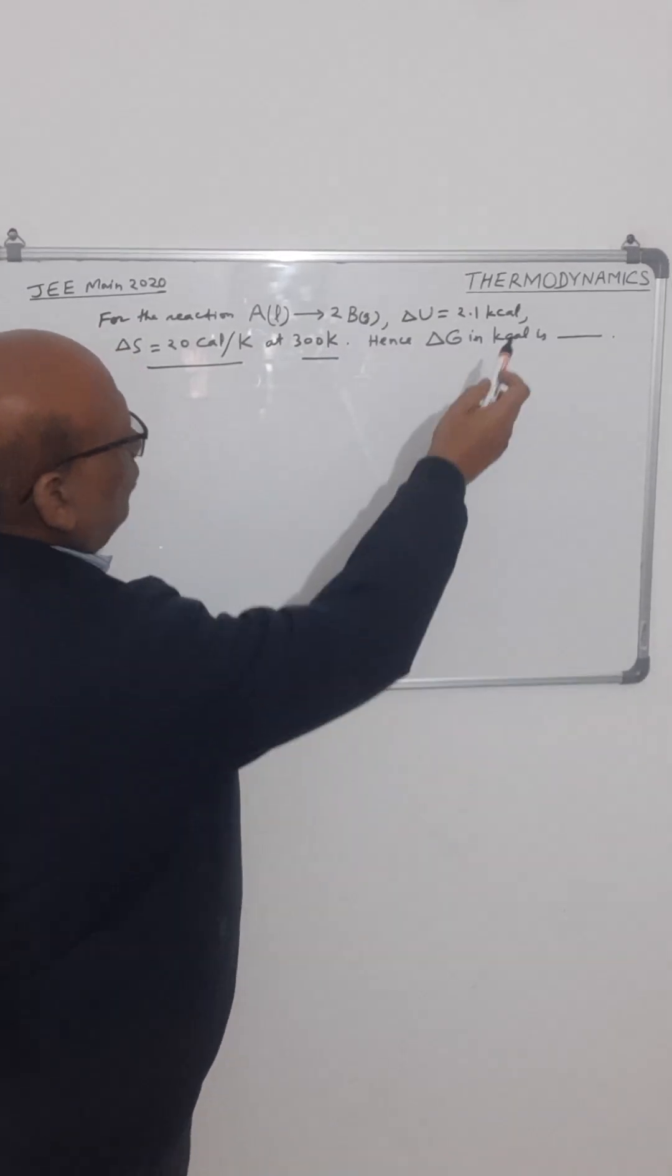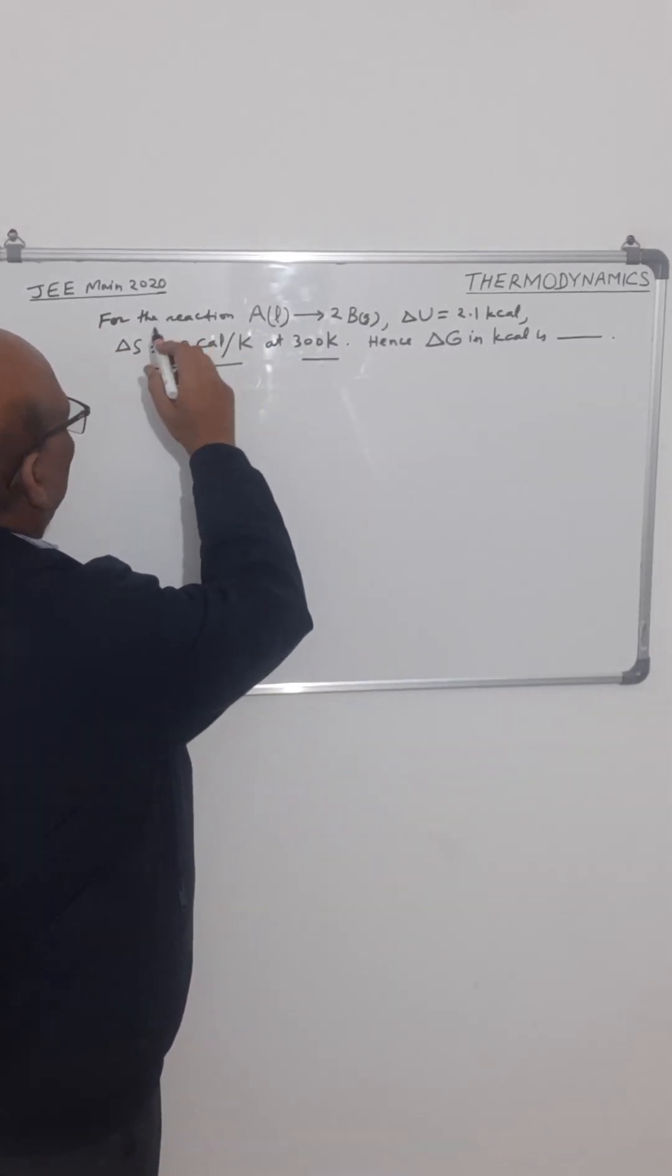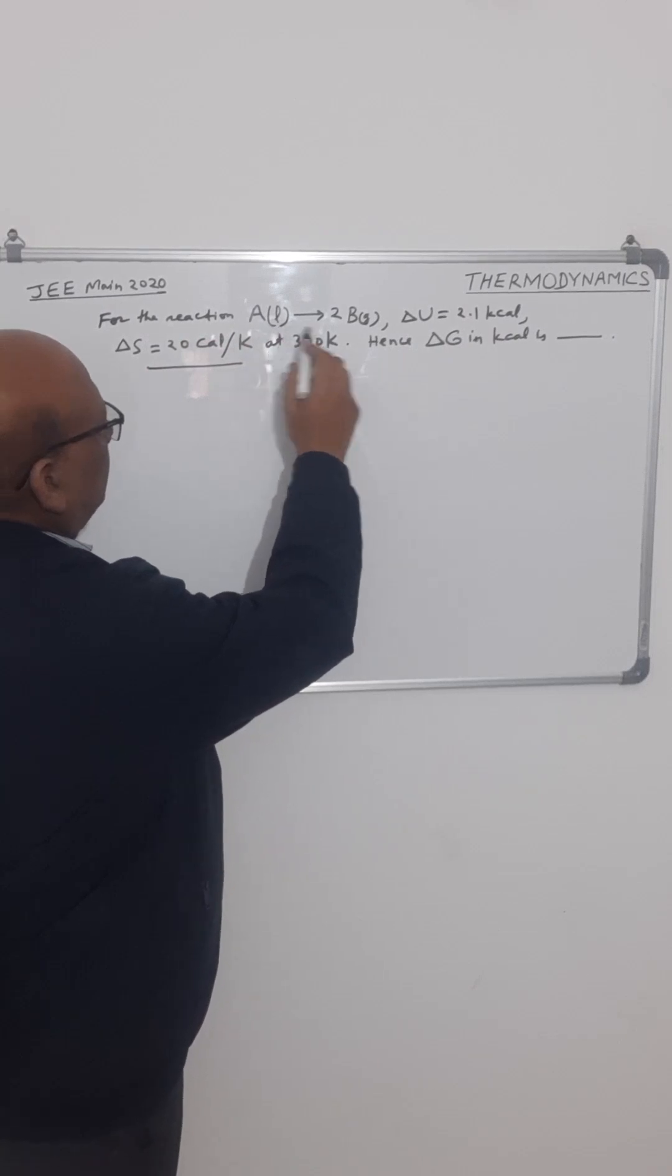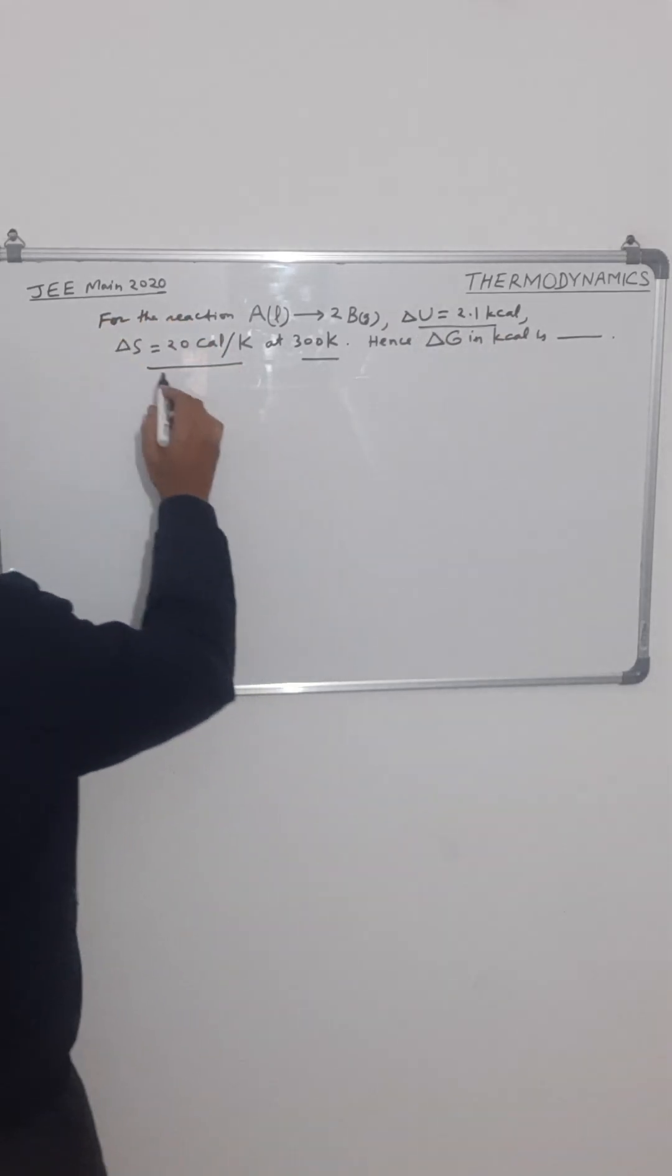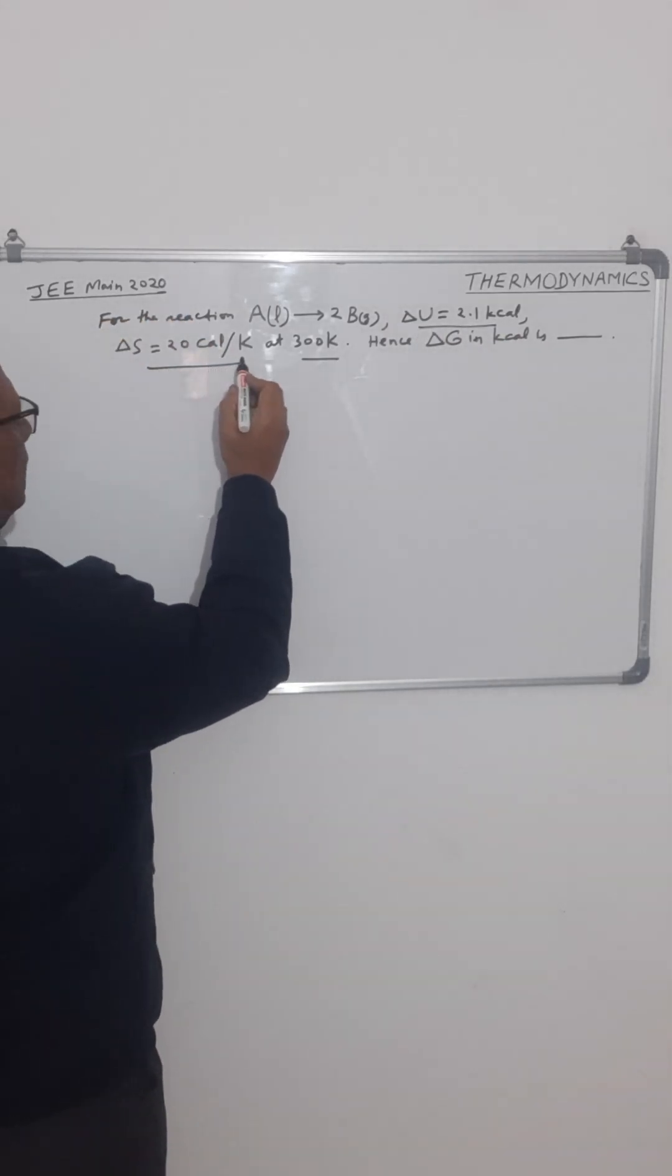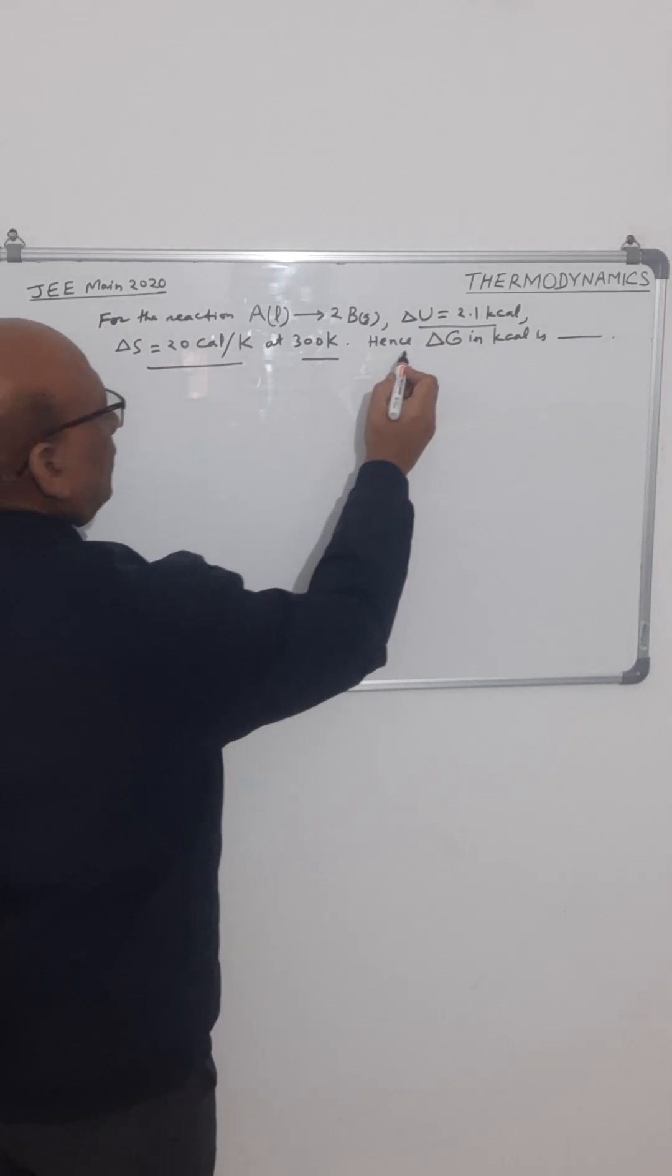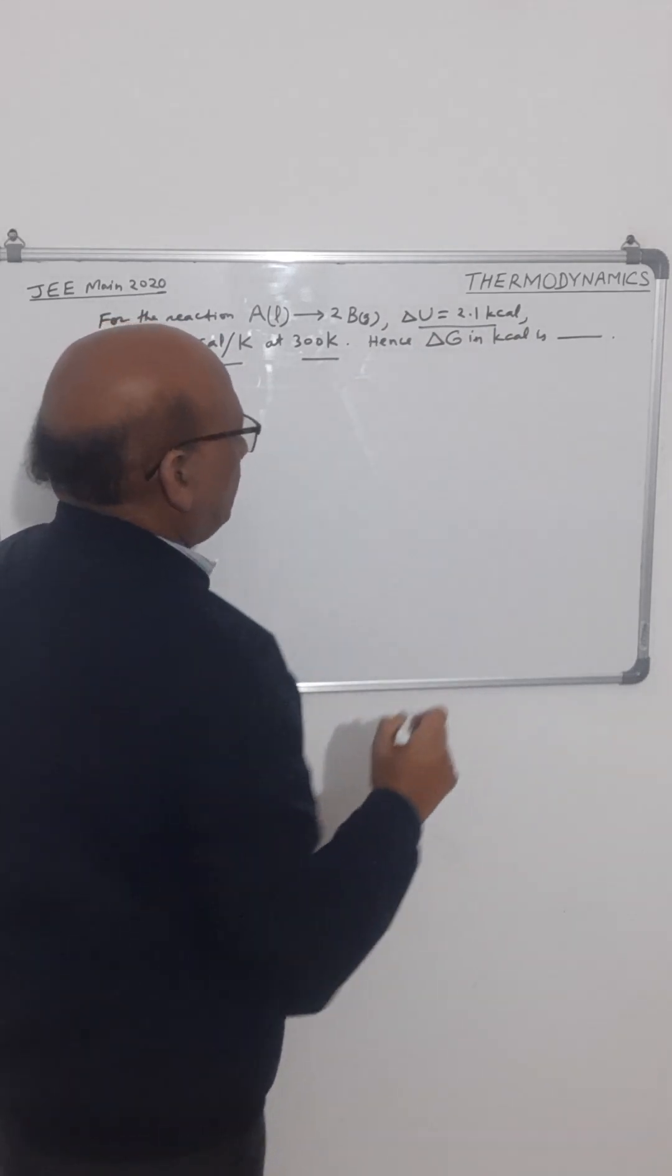This question related to thermodynamics was asked in JEE in 2020. For the reaction A liquid gives 2B gas, delta U is equal to 2.1 kilocalorie, delta S is equal to 20 cal per kelvin at 300 kelvin. Hence, delta G in kilocalorie is?